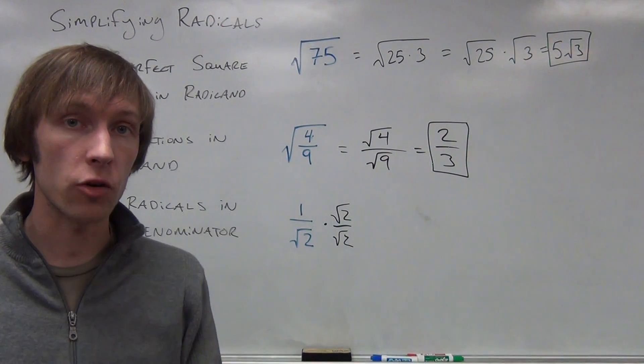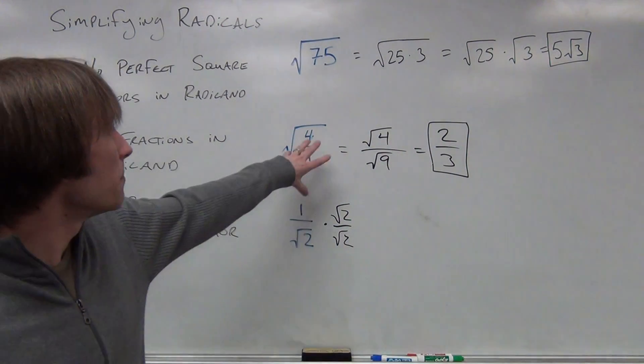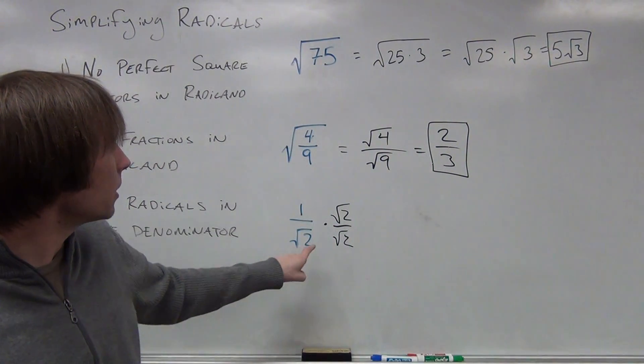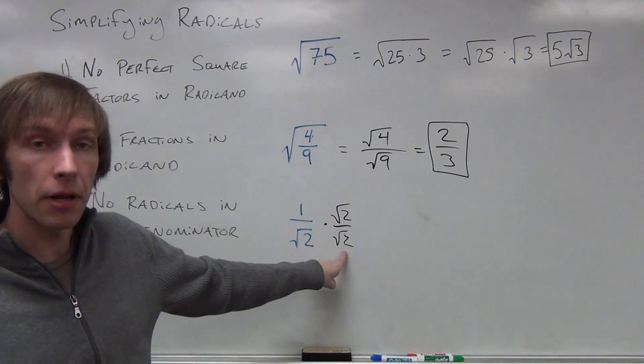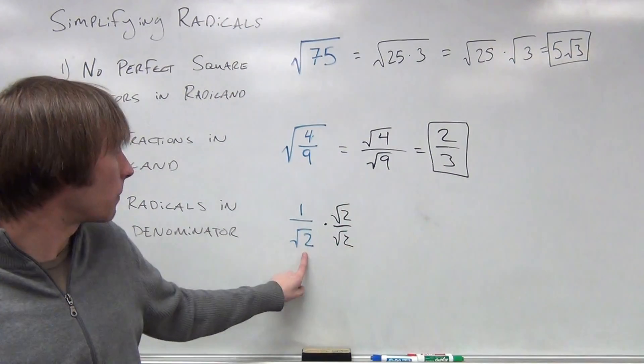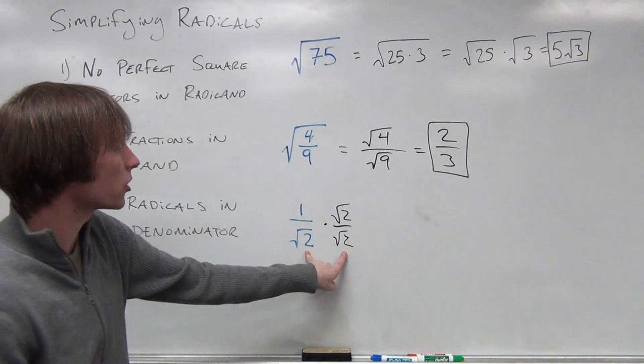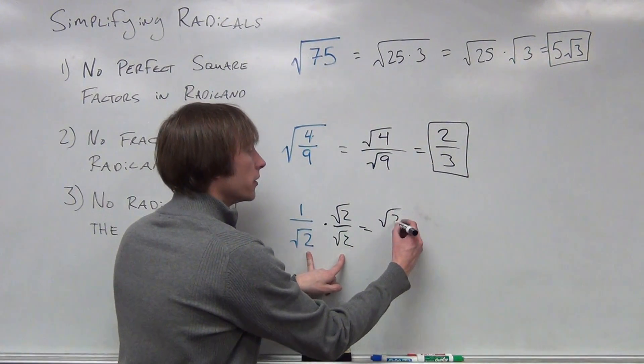I have to multiply by 1 represented as the square root of 2 divided by itself. So when you see a radical in the denominator, you can go about it two ways. Maybe you can simplify a fraction, or maybe you can multiply by 1 represented as the radical in the denominator over itself. This gives us a perfect square in the denominator.